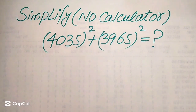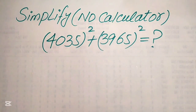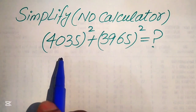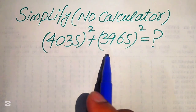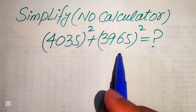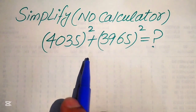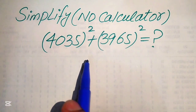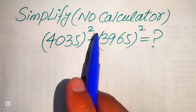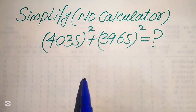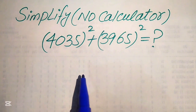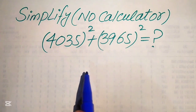Hello everyone. Today I want to show you how to simplify this algebraic expression: 4035 whole square plus 3965 whole square. We write this expression into simplified form, but remember one thing — a calculator is not allowed in this problem. It means that we need to show all of the working on this paper.